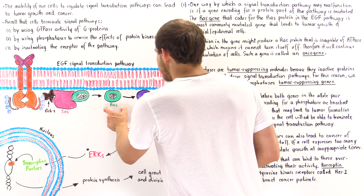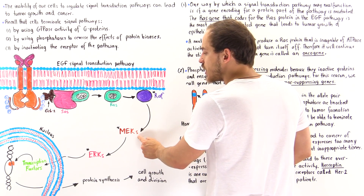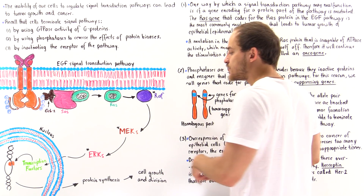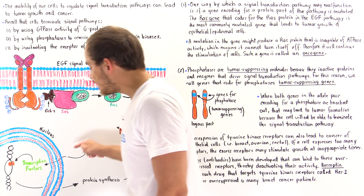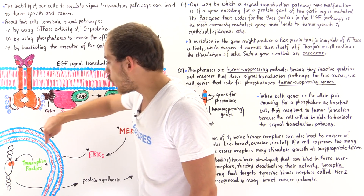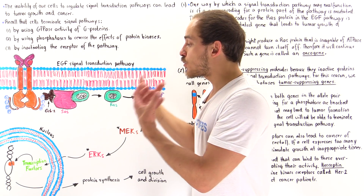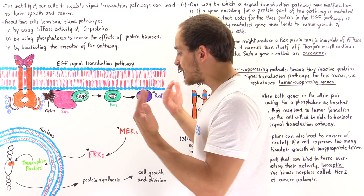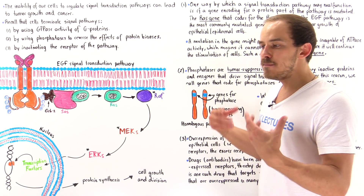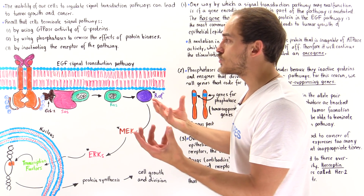Once RAS is activated, it moves on and activates a protein kinase we call RAF. Once this protein kinase is activated, it goes on to activate other protein kinases we call MEK. The MEK, once activated, goes on to activate other protein kinases we call ERK. These ERKs can actually move into the nucleus of our cell — through the double phospholipid bilayer of the nucleus — where they activate transcription factors. These transcription factors then express different types of genes that produce mRNA molecules, which are used by ribosomes to produce proteins that build up the cytoplasm and cytoskeleton.